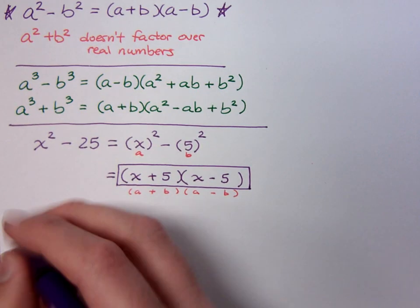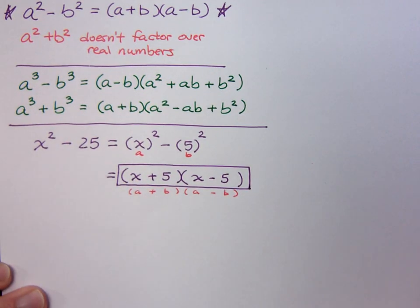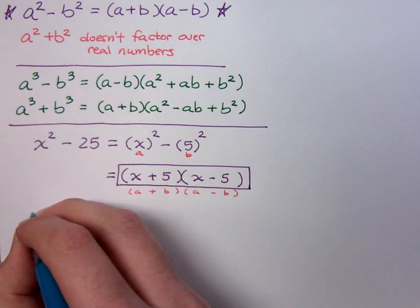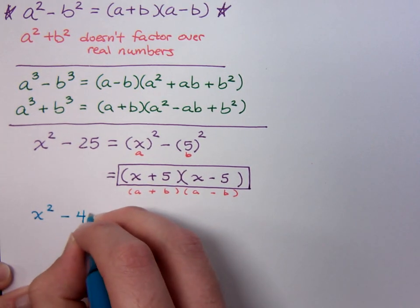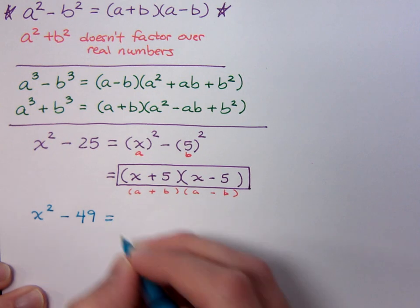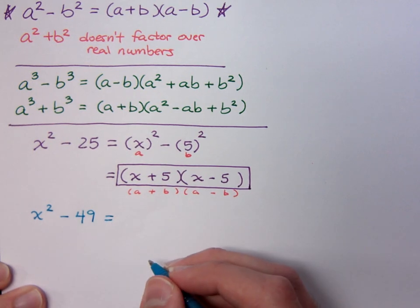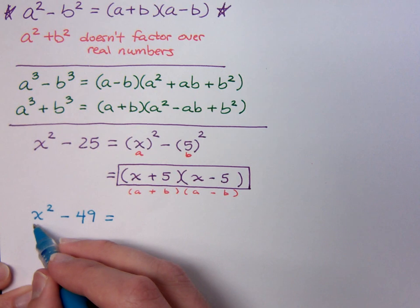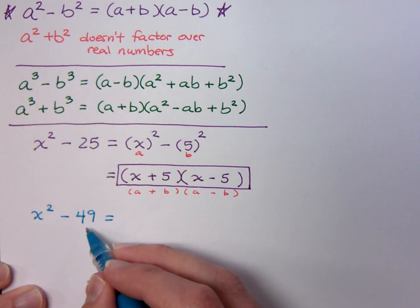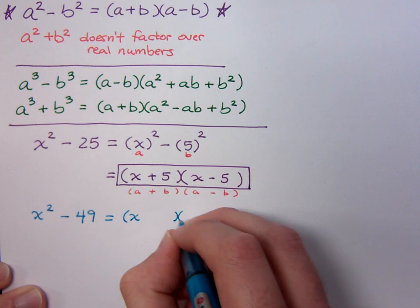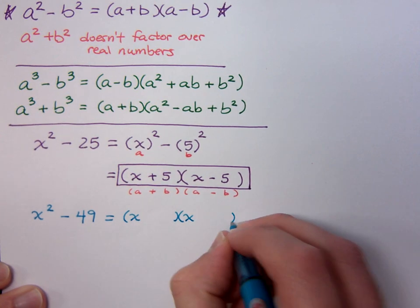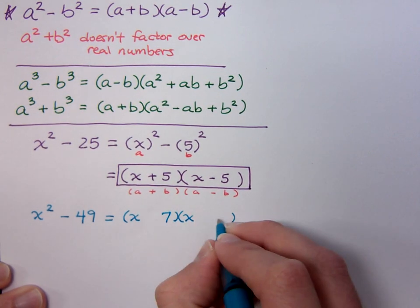Well let's try another one. Suppose we have x² - 49. The key is being able to recognize that you do have two squares. x² is the square of x, 49 is the square of 7.